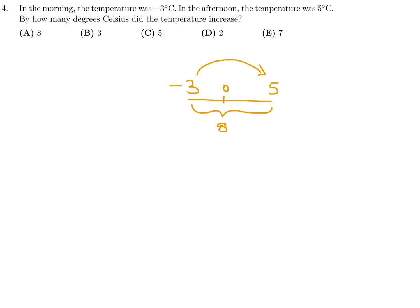Because originally, it's minus 3. Then you're going to go to 0, which is 3 units, and then another 5 units. So that's why it's 8. Number 4, that is A.